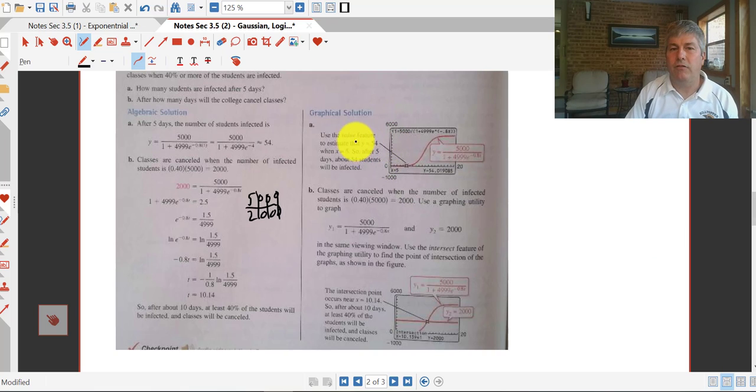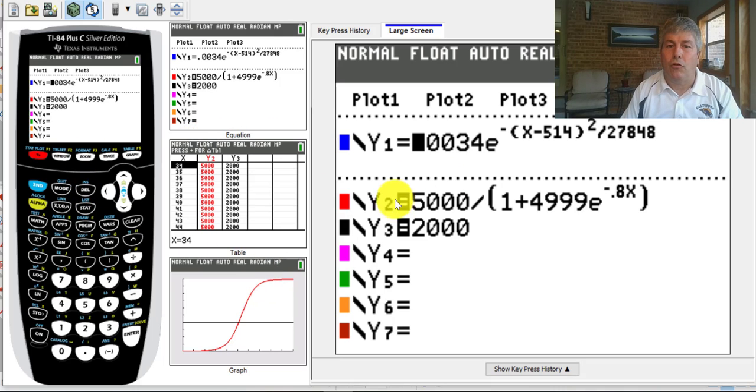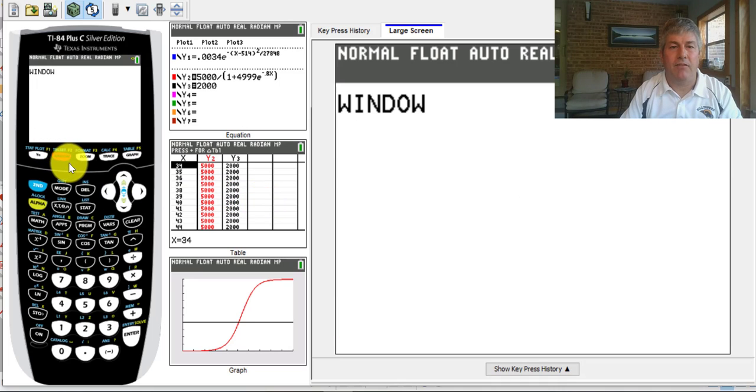Now there's another way to do this. You can do this on your graphing calculator. So using our calculator, we can put our function into our graphing calculator, but we also want to know when there's going to be 2,000 students infected. So that actually will be our second function. So I've put those functions in y2 and y3. So 5,000 divided by 1 plus 4,999 e to the negative 0.8x and y equals 2,000.